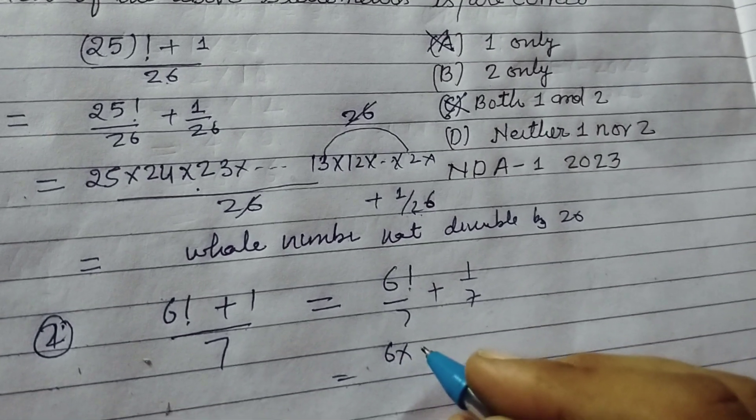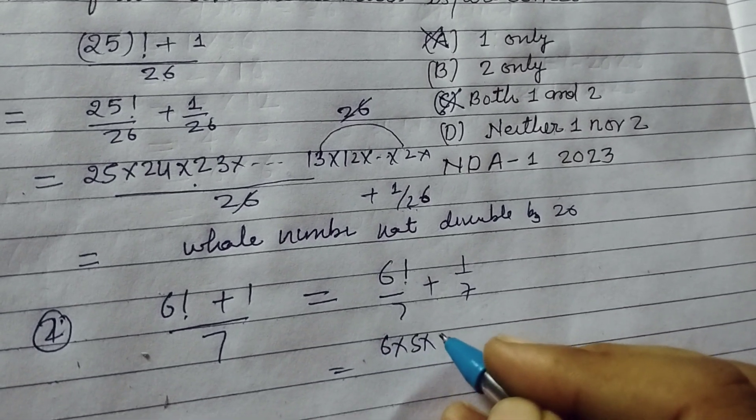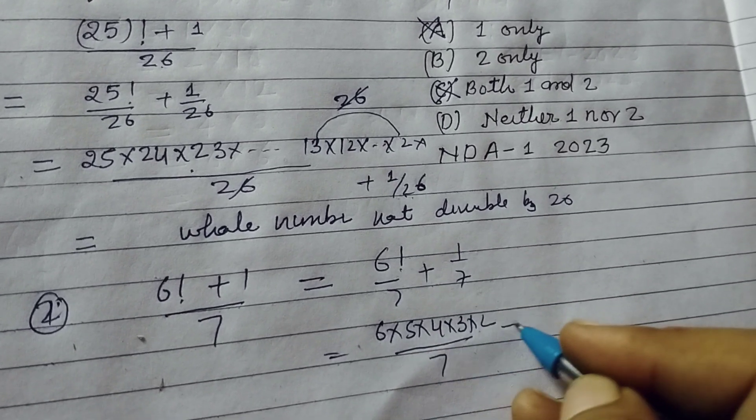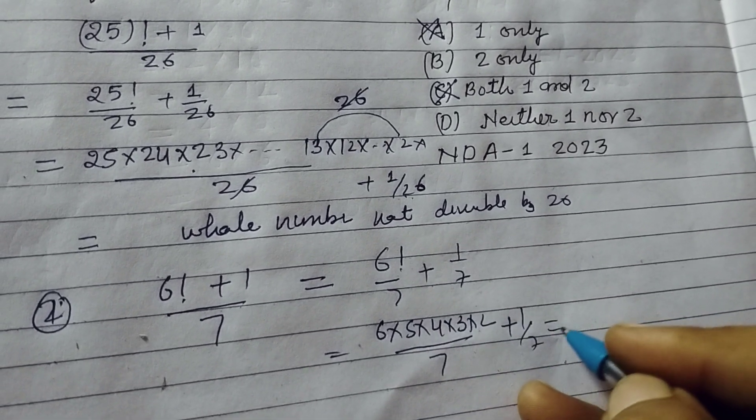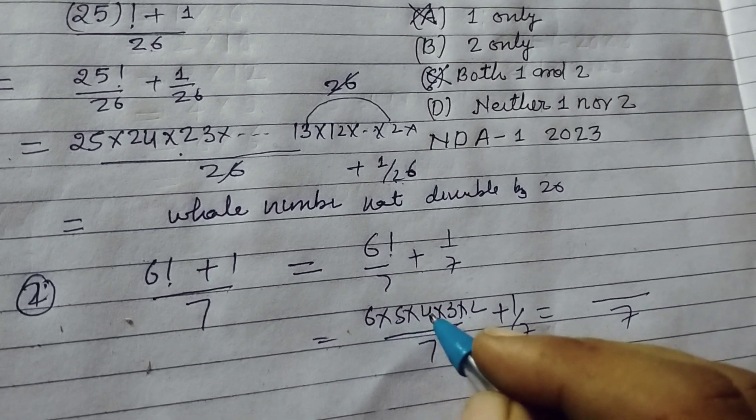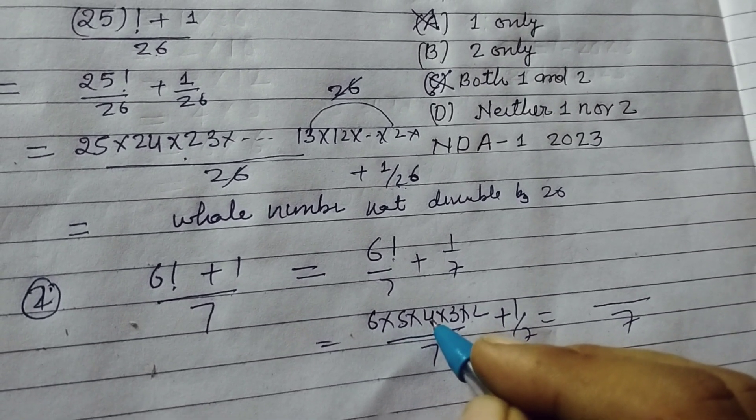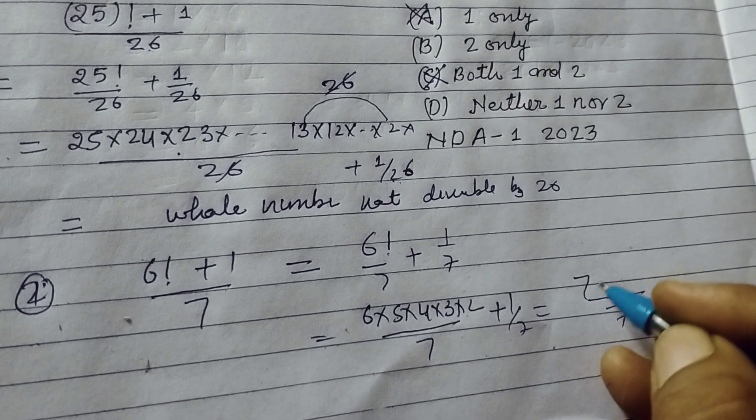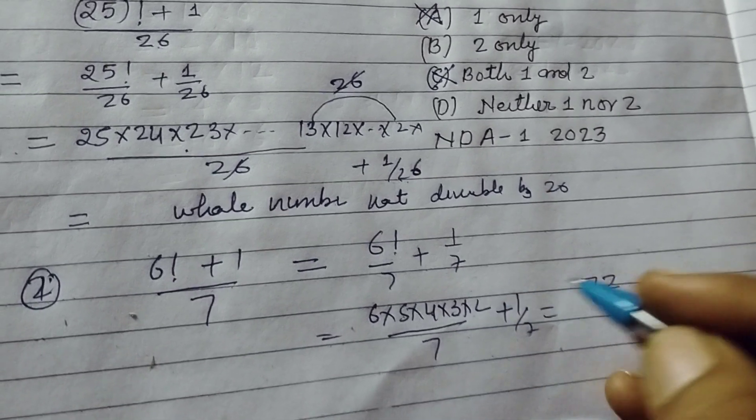This becomes 6 into 5 into 4 into 3 into 2 over 7 plus 1 by 7. We take 7 as common, so 6 × 5 is 30, 3 × 4 is 120, 120 × 3 to 6, 6 into 120.